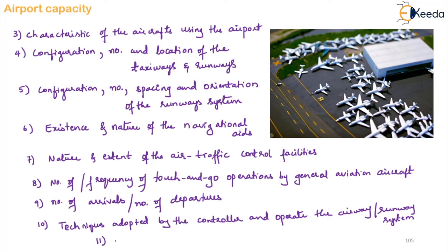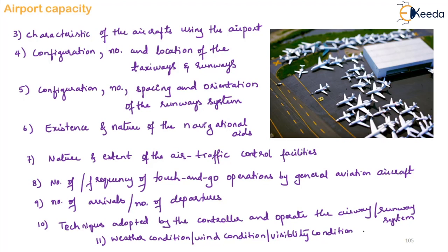The eleventh and last factor is weather conditions — wind condition and visibility condition — all of which also affect the capacity of the airport. So we have to take care of all 11 things before we decide what the airport capacity should be — how many aircraft are coming in and how many are moving away. Hope this lesson is clear to you. Thank you.